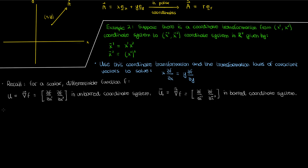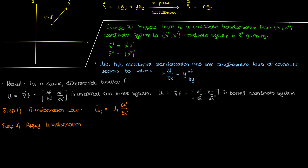To transform u to u bar, let's follow the same steps we did in the last example. The first is to identify the relevant transformation law, which in this case is the transformation law for a covariant tensor of rank 1, or a covariant vector. We've seen in previous videos how the transformation law for a covariant vector is given by the following. The next thing we do is apply the transformation law. Since r is the dummy index and since we're working in two dimensions, the first component of u bar is the sum of two expressions — summing over r from 1 to 2 according to Einstein notation — and the second component of u bar is similarly the sum of two terms.